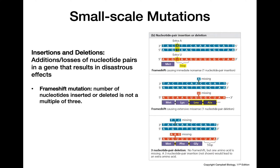Our codons are made up of three nucleotides, so our DNA and mRNA is read in groups of three. If we remove a number of nucleotide pairs that is not a multiple of three, it throws off the organization of the remaining codons and results in a different protein than what would have been made originally.